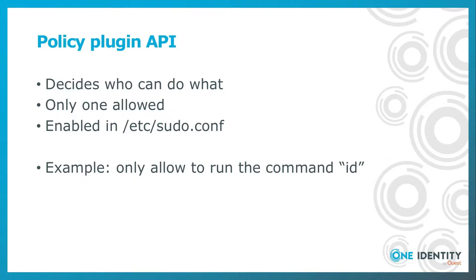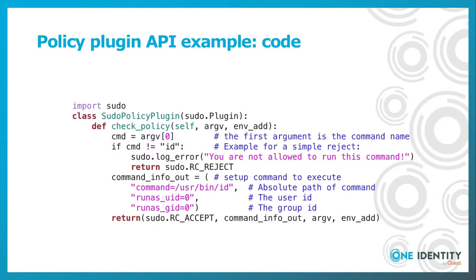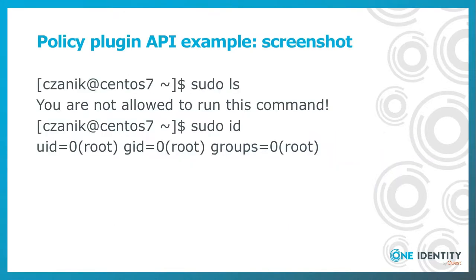In the next slide, you will see a short Python code which allows you to run the command 'id' but nothing else. The check_policy method checks the command name, and if it's not 'id', then it returns with an error. Otherwise, it continues to set up the environment and allows you to run the command. Here you can see a screenshot: when the user tries to run ls, it's rejected by sudo, but if you run id, then it is run with correct permissions.